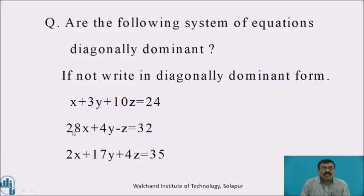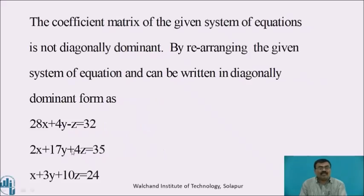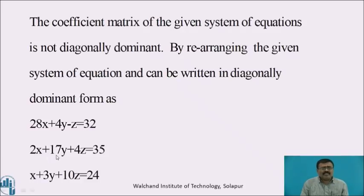For that, equation 2 becomes the first equation, equation 3 becomes the second equation, and equation 1 becomes the third equation. That is: 28x + 4y − z = 32; 2x + 17y + 4z = 35; x + 3y + 10z = 24.